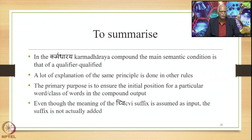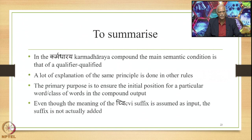To summarize: in the Karmadharaya compound, the main semantic condition is that of a qualifier and qualified. The main sutra is Visheshanam Visheshyena Bahulam, and other rules explain it in some detail. The primary purpose in this explanation is also to ensure the initial position for a particular word or class of words in the compound output. We also note that even though the meaning of the Chvi suffix is assumed as input, the suffix is not actually added, and some other operations which depend on the physical addition of Chvi — like Langdhaning — do not happen. Only the meaning is to be understood. We study some more instances of Karmadharaya Samasa in the coming lecture.